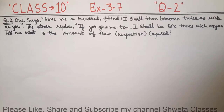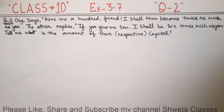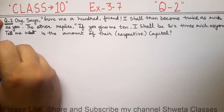In this question, we have two people — let us suppose one is me and the second one is you. So I say that if you give me 100 rupees, then I will become twice as rich. And you say that if I give you 10 rupees, then you will give me 6 times. So let us solve this question — first, let us figure out how much money each of us has.